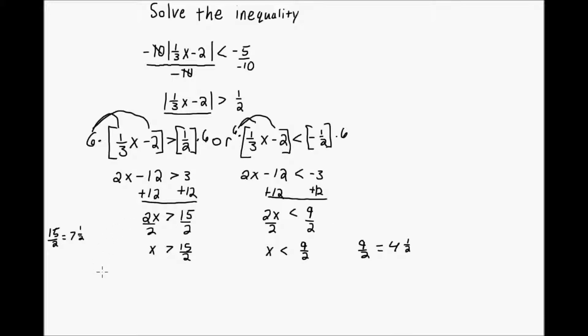Let's go ahead and look at the graph. So, for my graph, because this is one of the solutions I'll expect to see is a graph. Let's see, the two numbers are 15 over 2 and 9 over 2, which is 7 and 1 half and 4 and 1 half.